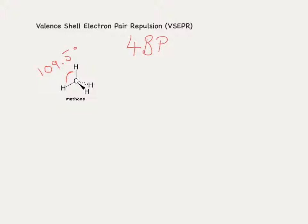If we look at a molecule with the same number of pairs of electrons we might see something different. This time we have ammonia, which is very similar to methane but instead of four bonding pairs we have three bonding pairs — from each of the nitrogen-hydrogen bonds — and one lone pair (LP) of electrons. The shape looks very similar, but whereas before each bonding pair repelled equally, there is now greater repulsion between the lone pair and the bonding pairs, because the lone pair wants to take up more room. The bond angle is therefore reduced by 2.5 degrees between the bonding pairs.